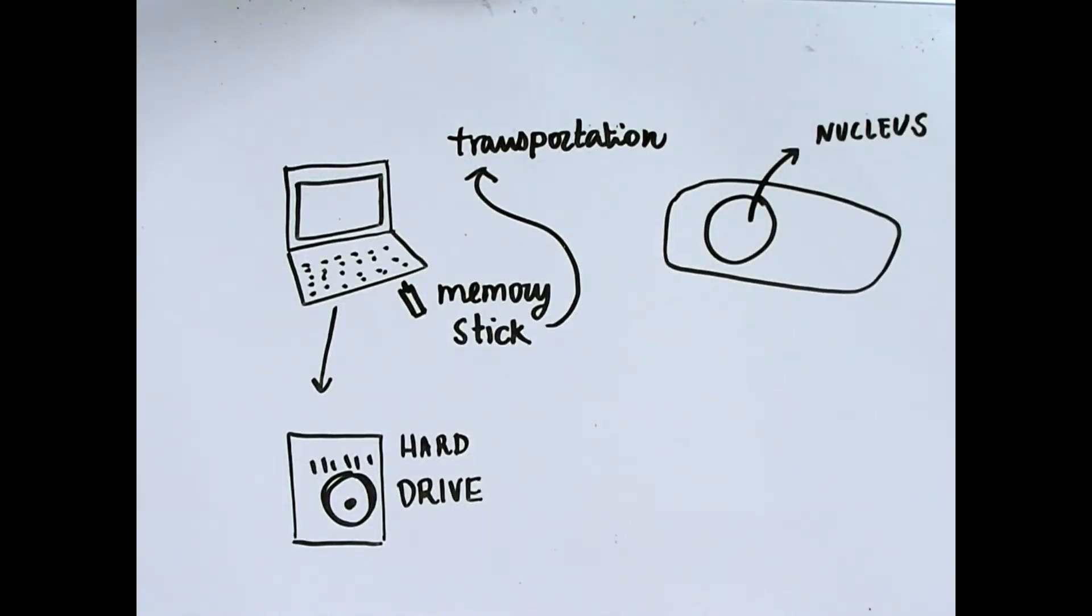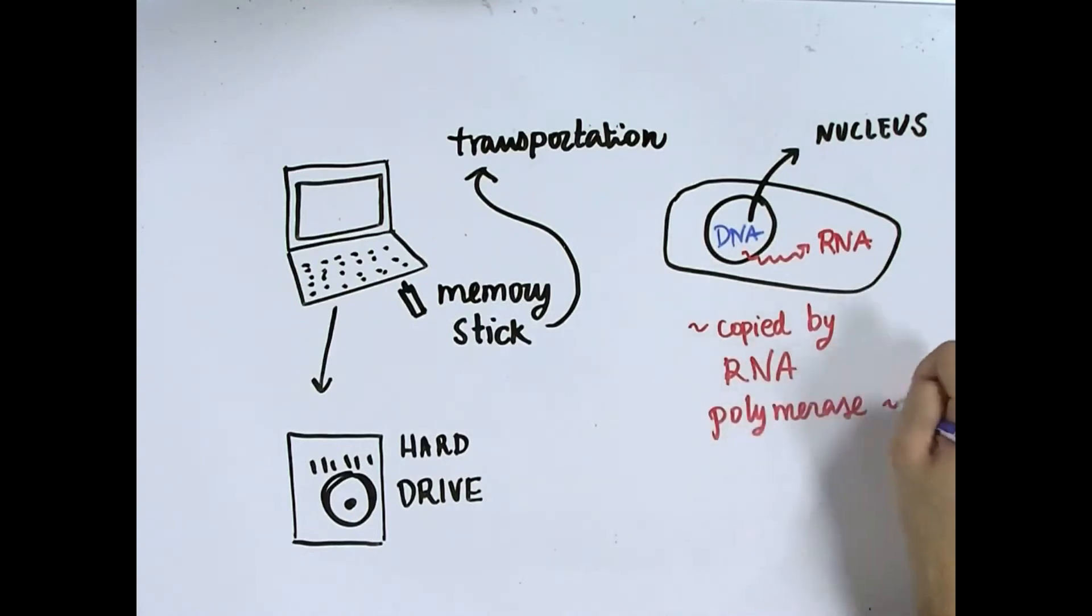During transcription, which is the first step of gene expression, DNA is copied into RNA by an enzyme called RNA polymerase.